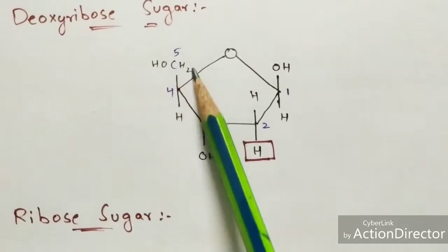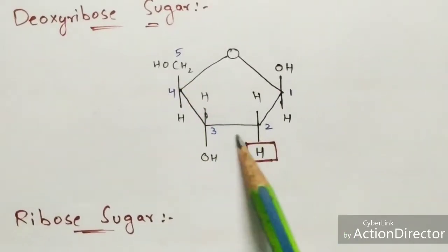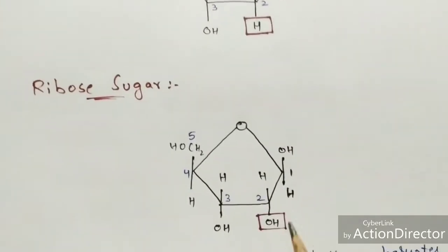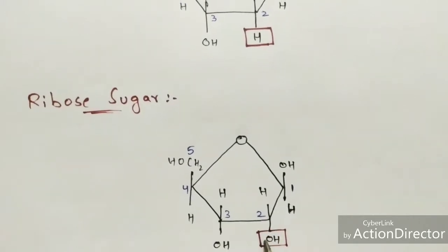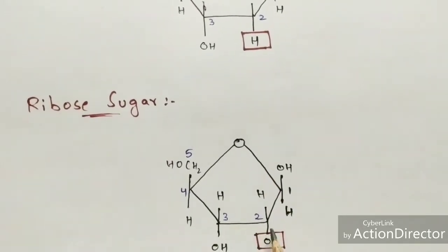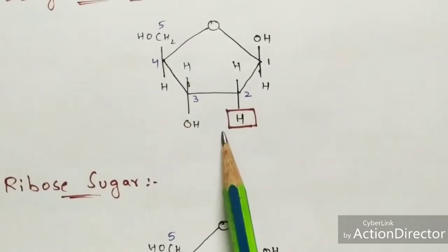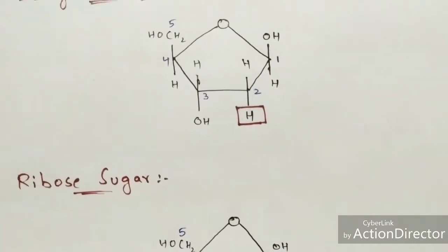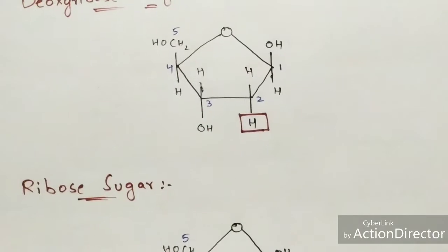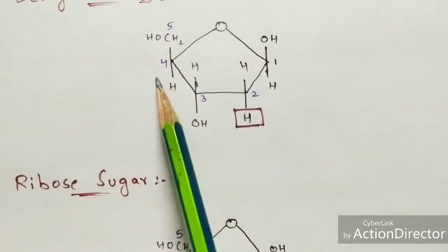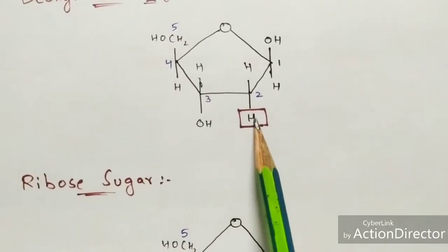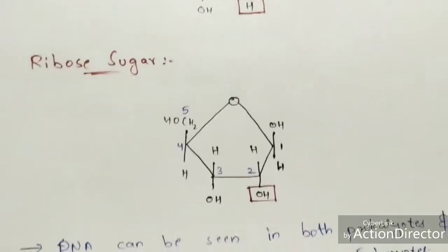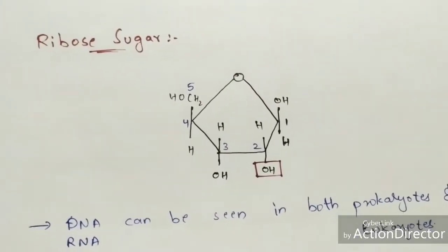At the second carbon position, deoxyribose sugar has an H group, whereas ribose sugar has an OH group at the second carbon position. This is the basic difference: deoxyribose sugar has H at position 2, and ribose sugar has OH at position 2.